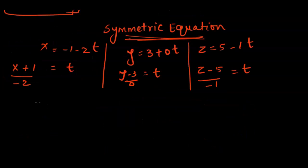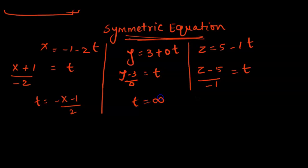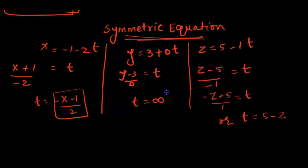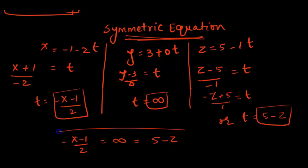We can simplify these t values. For the x part, multiplying numerator and denominator by negative sign gives us negative x minus 1 over 2. For the y part, anything divided by 0 is undefined, so we write t equals infinity. For the z part, we can write 5 minus z equals t. Then we put all these t values equal to each other: negative x minus 1 over 2 equals infinity equals 5 minus z. This is the symmetric form of the equation in R3 for a line.